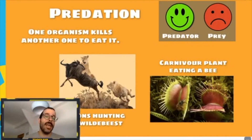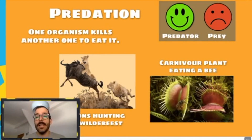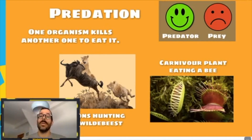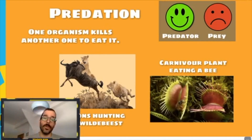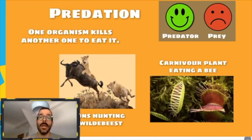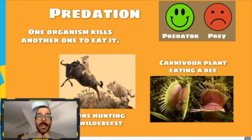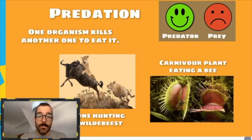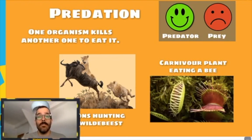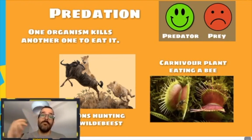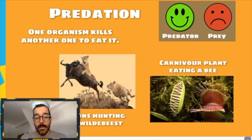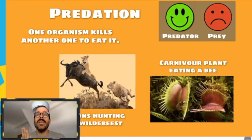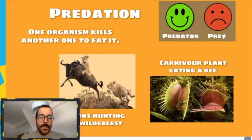We have studied the lion hunting the wildebeest, and here we can also see a carnivorous plant eating a bee. The predator is happy because it is eating, while the prey is killed — so it is not an equal relationship.